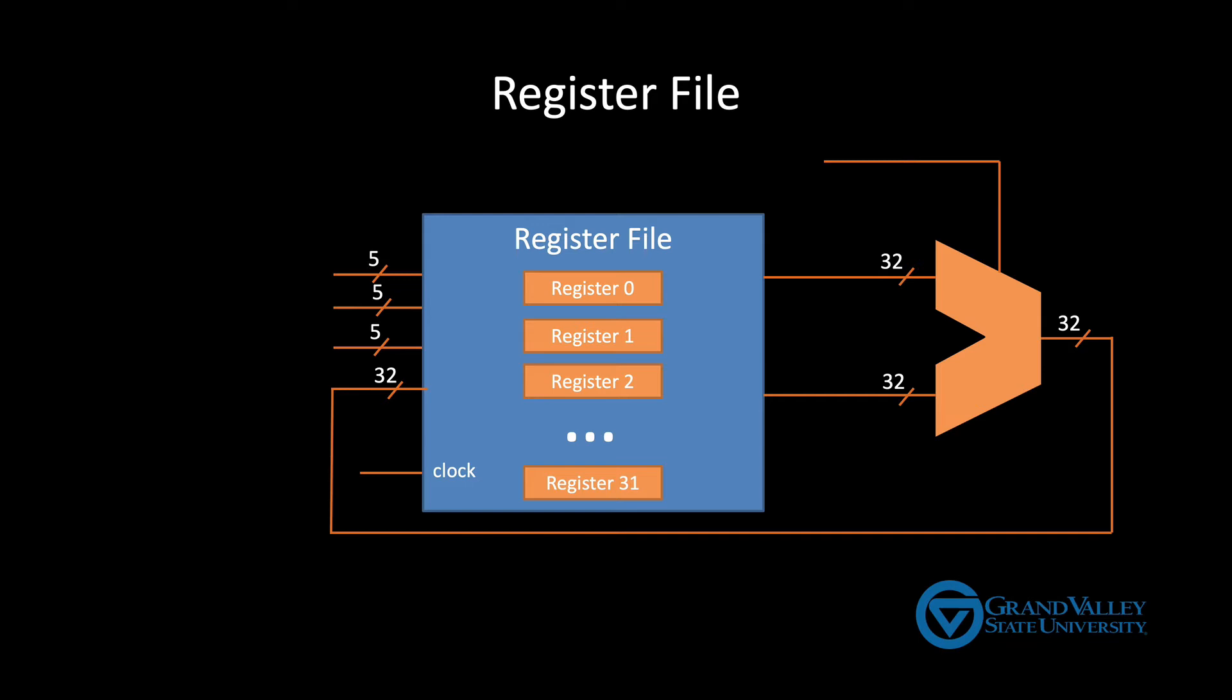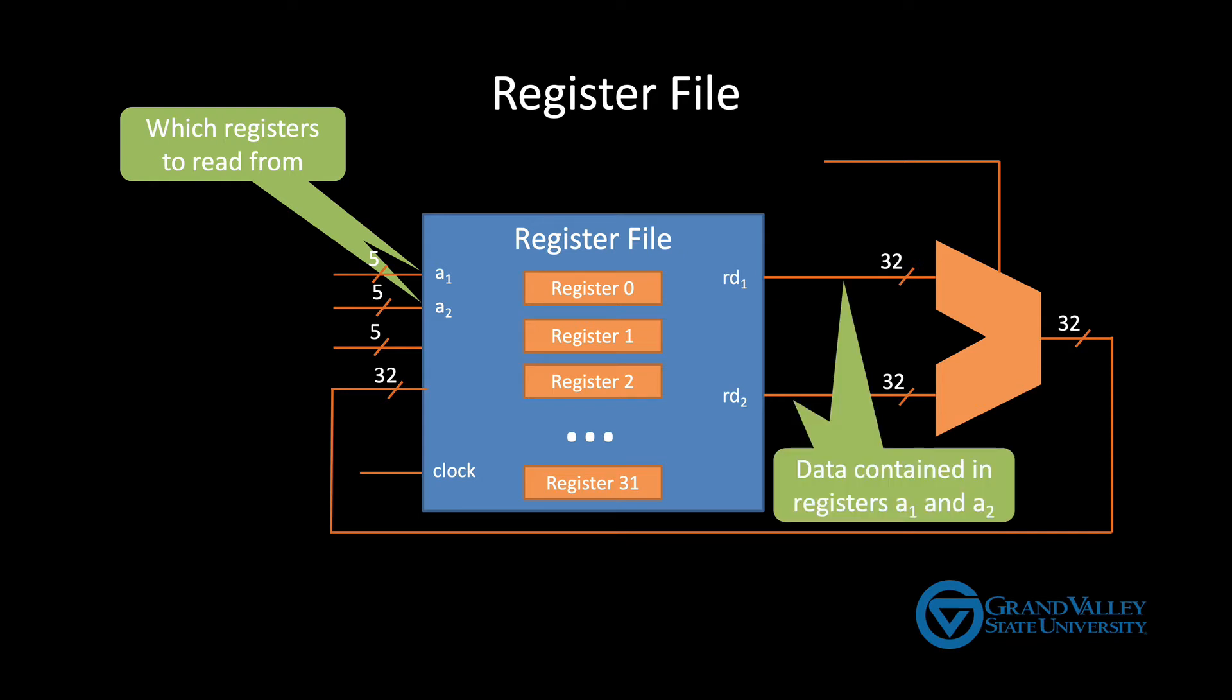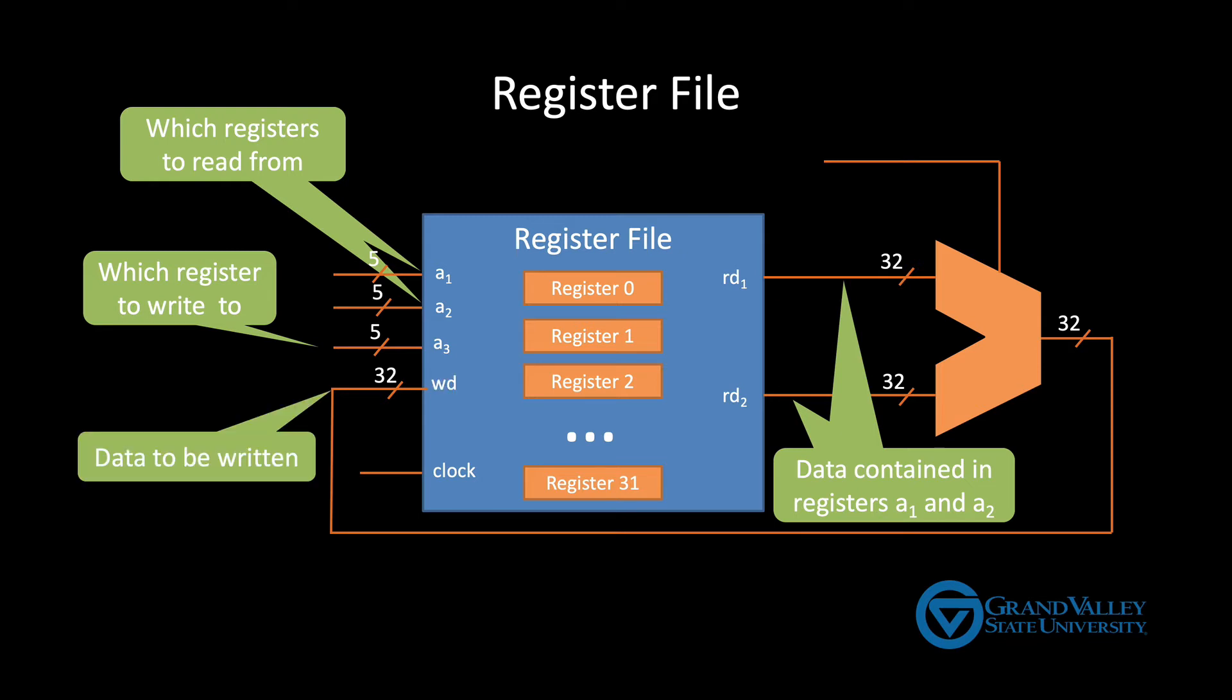The textbook calls the first two inputs A1 and A2. They identify the two registers that contain the data to be used, the registers that will send their data onto the ALU. The corresponding outputs are called RD1 and RD2. They contain the data in the registers that are specified by A1 and A2. Input A3 specifies which register is going to be updated with the results of the arithmetic, and the WD input is what actually contains that value.